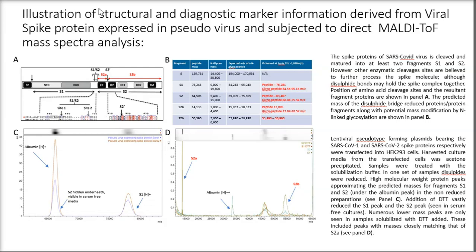The spike protein of the SARS viruses, including COVID-19, are proteolytically cleaved to become active. It is known that they are at least cleaved once into an S1 and S2 fragment.